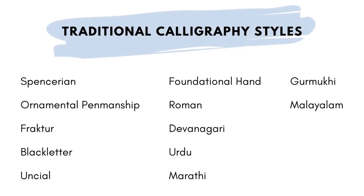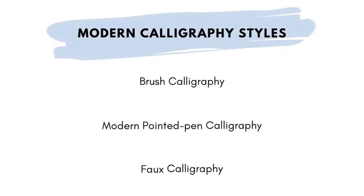I'll share a few more examples that fall under traditional and modern styles. Popular traditional calligraphy scripts include Spenserian, Ornamental Penmanship, Fraktur, Black Letter, Uncial, Foundational Hand, Roman, Devanagari, Urdu, Marathi, Gurmukhi, and Malayalam. For modern calligraphy styles, you can look at Brush calligraphy, Modern Pointed Pen calligraphy, and Folk calligraphy.